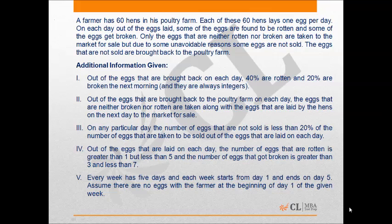Let's understand this. Every day 60 eggs are laid and taken to the market for selling. Some eggs get rotten, some get broken, and some are sold. The remaining are brought back. The next morning, out of the eggs brought back, some get rotten and broken, and they are again taken to the market along with the 60 eggs laid on the next day. This same process repeats for all 5 days of the week.